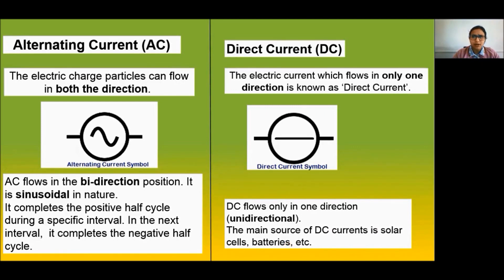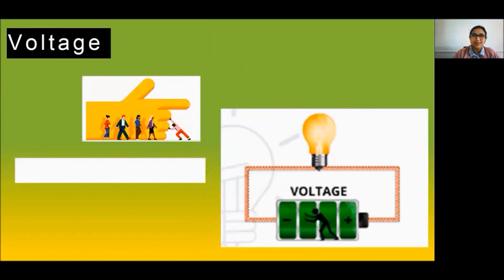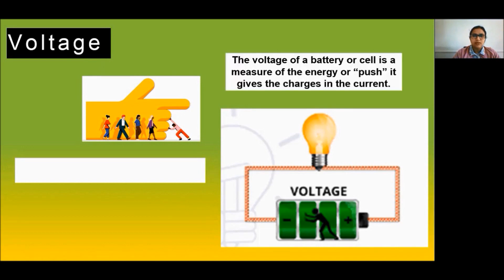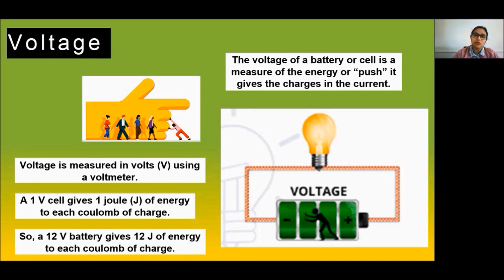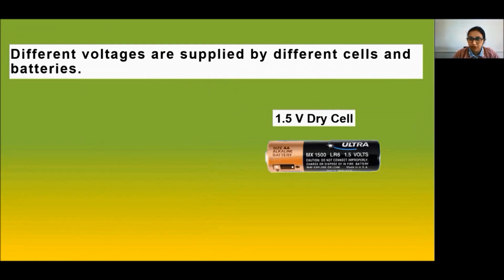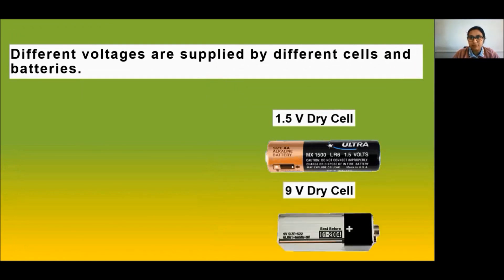What makes electric charges flow? The voltage of a battery or cell is a measure of the energy or push it gives the charges in the circuit. Voltage is measured in volts using a voltmeter. A one-volt cell gives one joule of energy to each coulomb of charge, and a 12-volt cell gives 12 joules of energy to each coulomb of charge. Common cells include 1.5 volt, 9 volt, and 12 volt batteries.